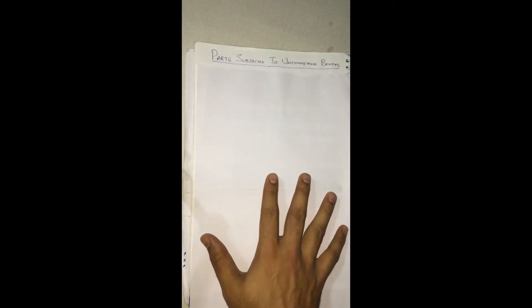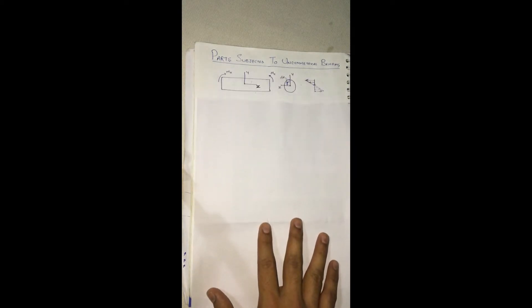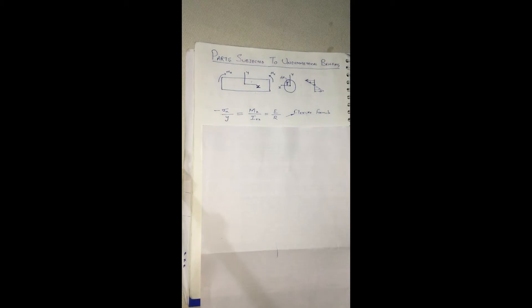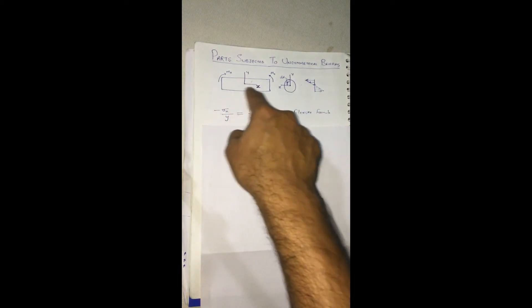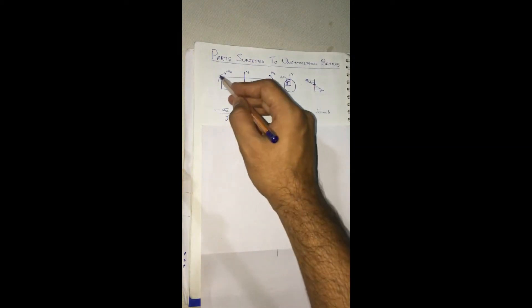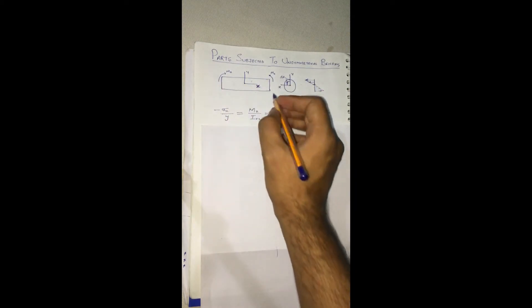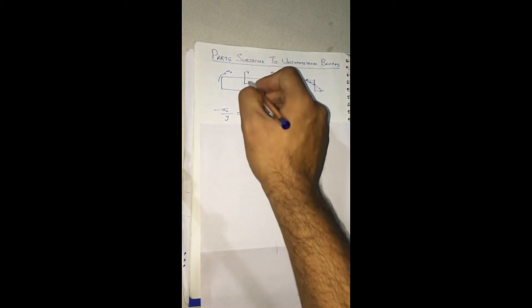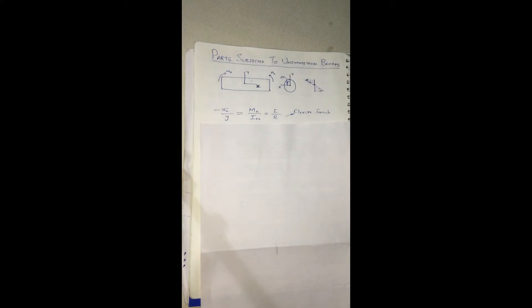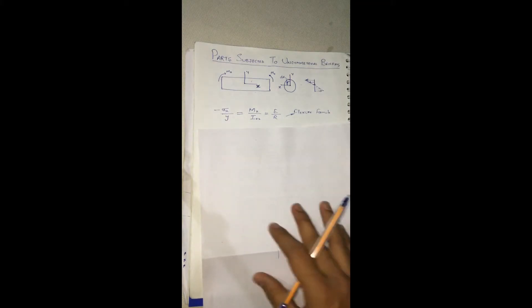Before going to that, let's have a quick recapitulation of what we did in the previous lecture. We were discussing about parts subjected to unsymmetrical bending and we came across the flexural formula. This flexural formula is from the bending equation: sigma_yy equals M by I equals E by R. The beam lies along the x-axis, and moment Mz acts about the beam.